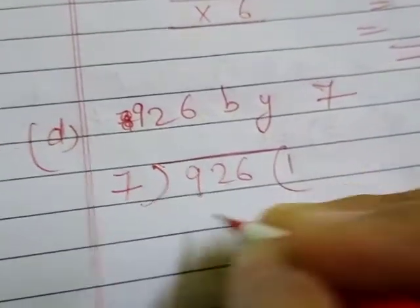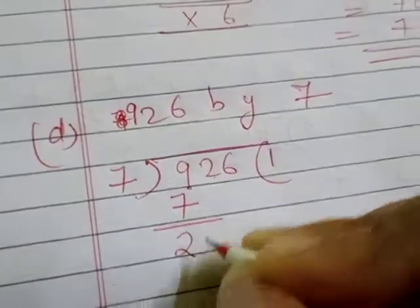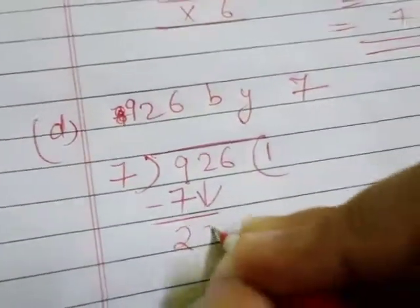So, 7 ones are 7. It will remain here 2. Then this 2 will be carried forward here.